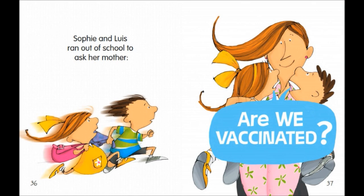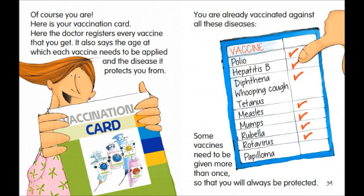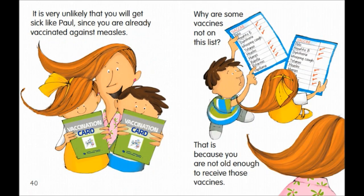Sophie and Luis ran out of school to ask their mother. Are we vaccinated? Of course you are. Here is your vaccination card. Here, the doctor registers every vaccine that you get. It also says the age at which each vaccine needs to be applied and the disease it protects you from. You are already vaccinated against all these diseases. Some vaccines need to be given more than once so that you will always be protected. It is very unlikely that you will get sick like Paul since you are already vaccinated against measles.